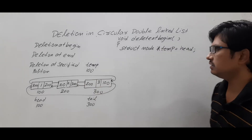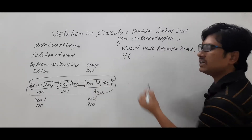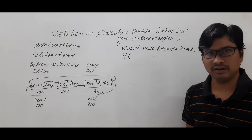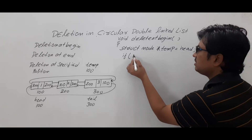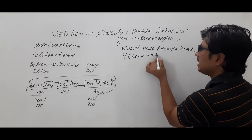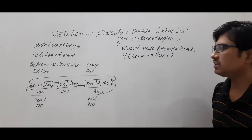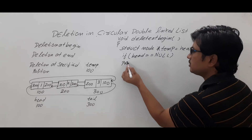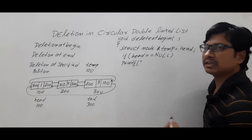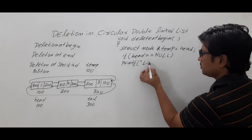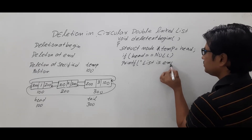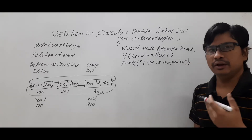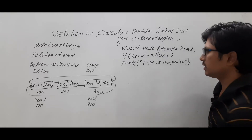Now to delete a node, first I need to check whether any nodes are there in the list or not. I will check: if head is equal to null, then the list is empty. If the list is empty there are no nodes, so we display the statement 'list is empty' so the user understands they are trying to delete from an empty list.